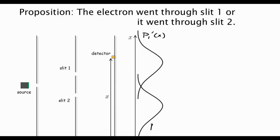It turns out P1 prime looks very similar to P1 of x, P2 prime looks very similar to P2 of x. This was the curve that we got when we closed slit 2. This is the curve that we got when we closed slit 1.